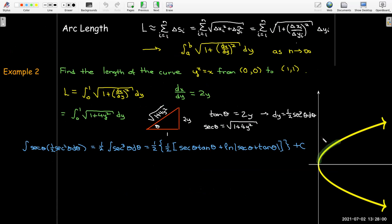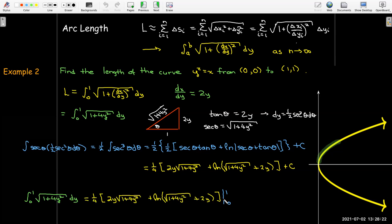So I'll just use that as a formula and change that back to y. So tangent theta is 2y, secant theta is the radical of 1 plus 4y squared. So making that substitution I can now evaluate that between 0 and 1 to find the arc length and so I get 1/4 in brackets 2 radical 5 plus the natural log of radical 5 plus 2.